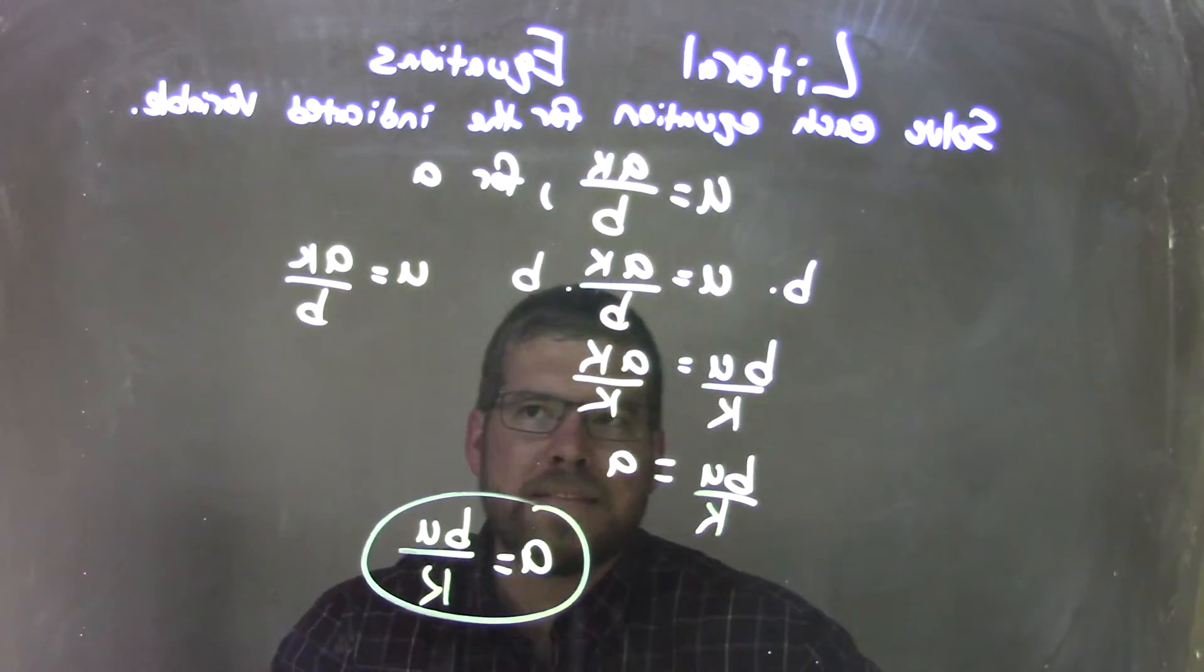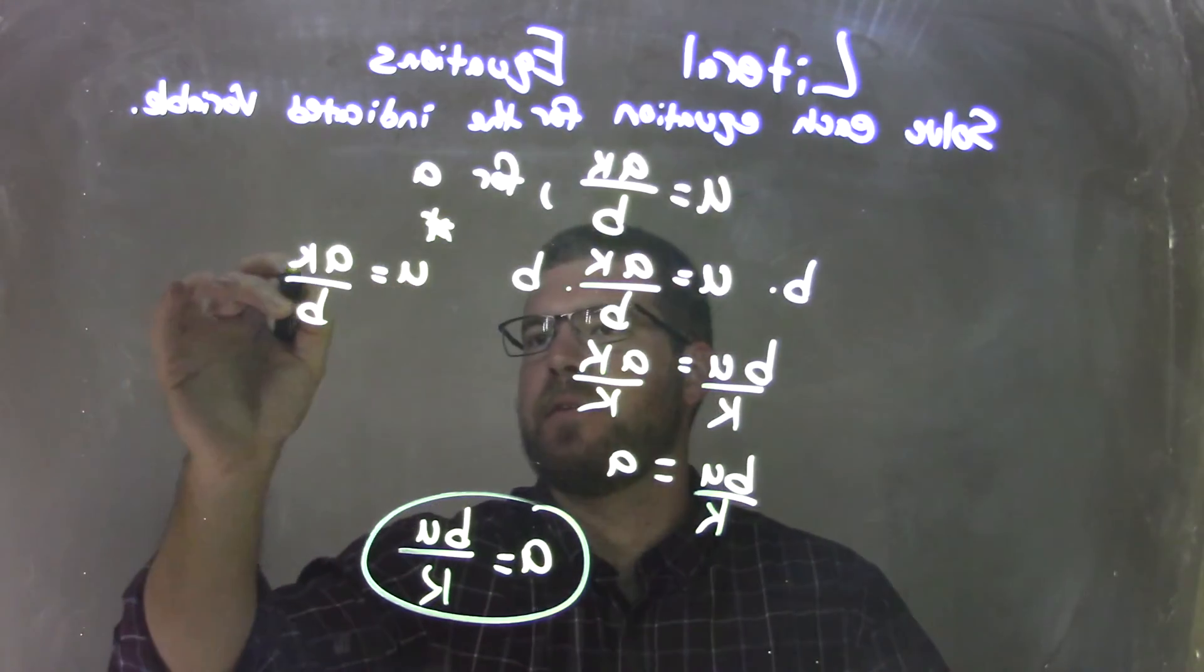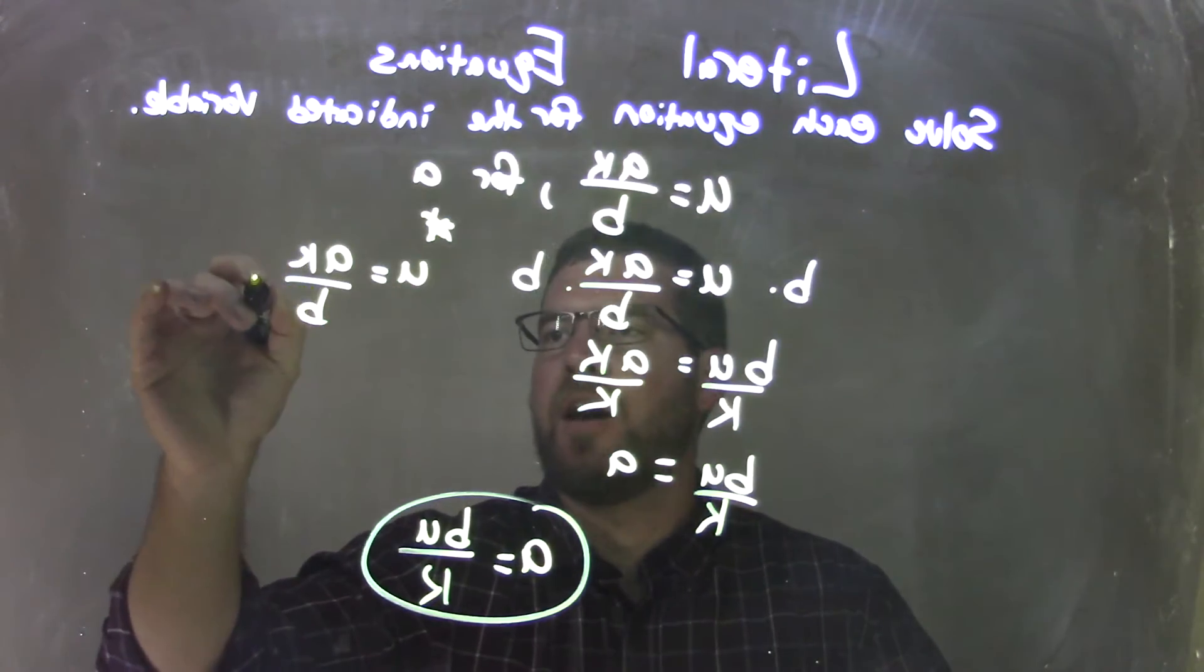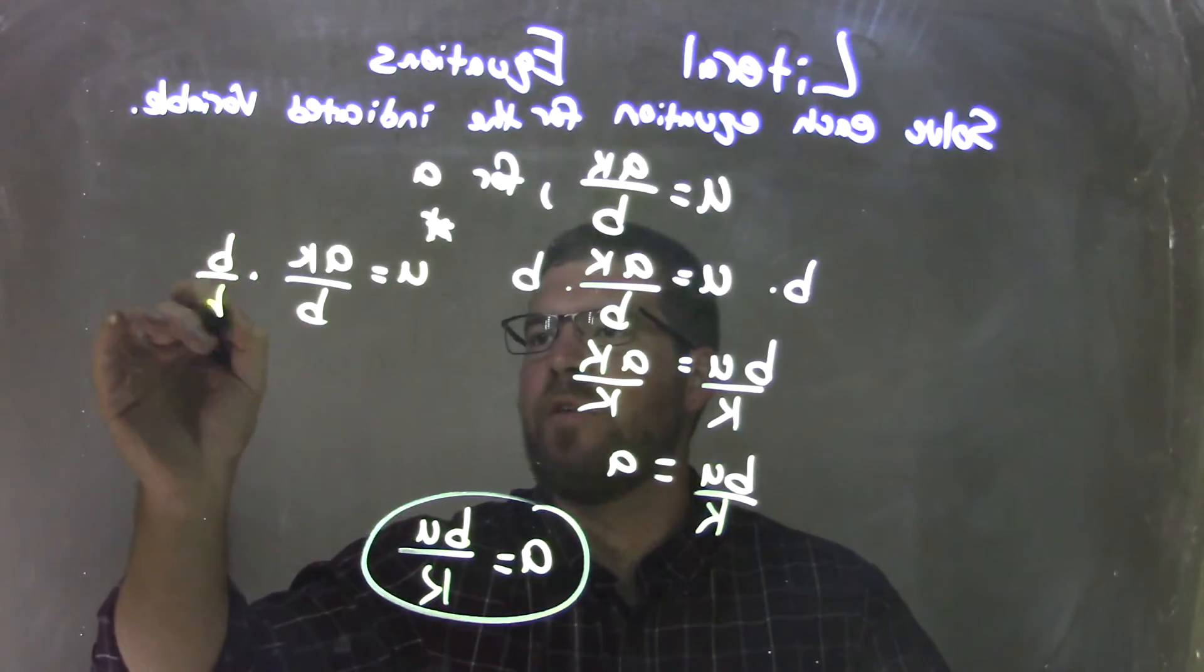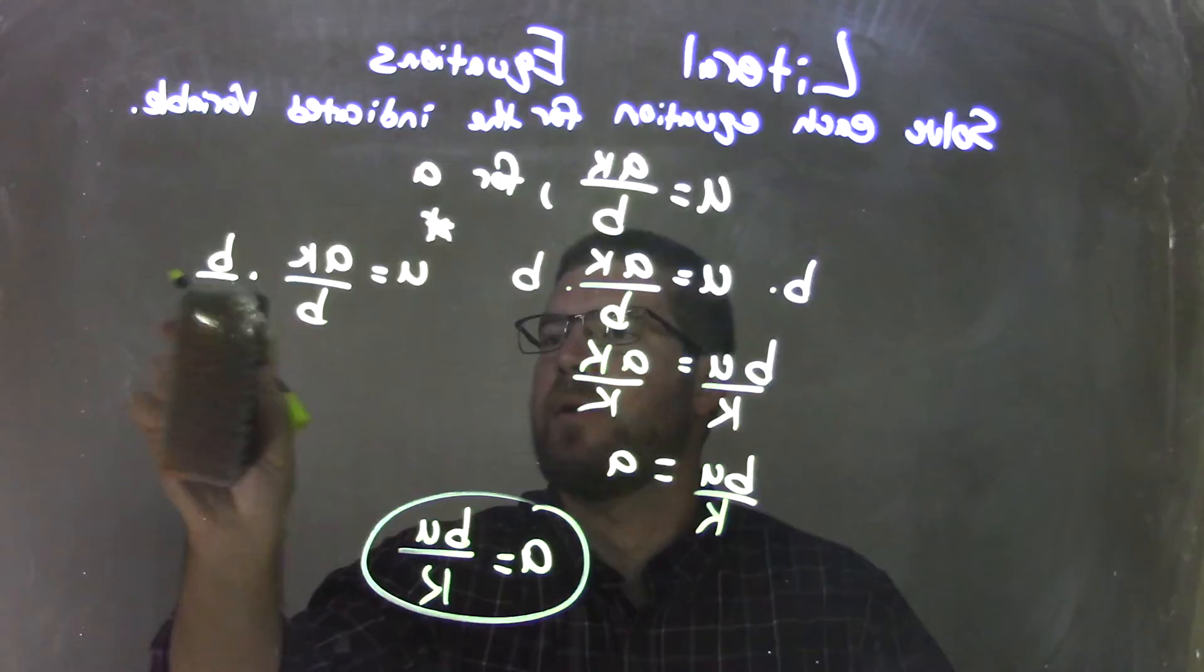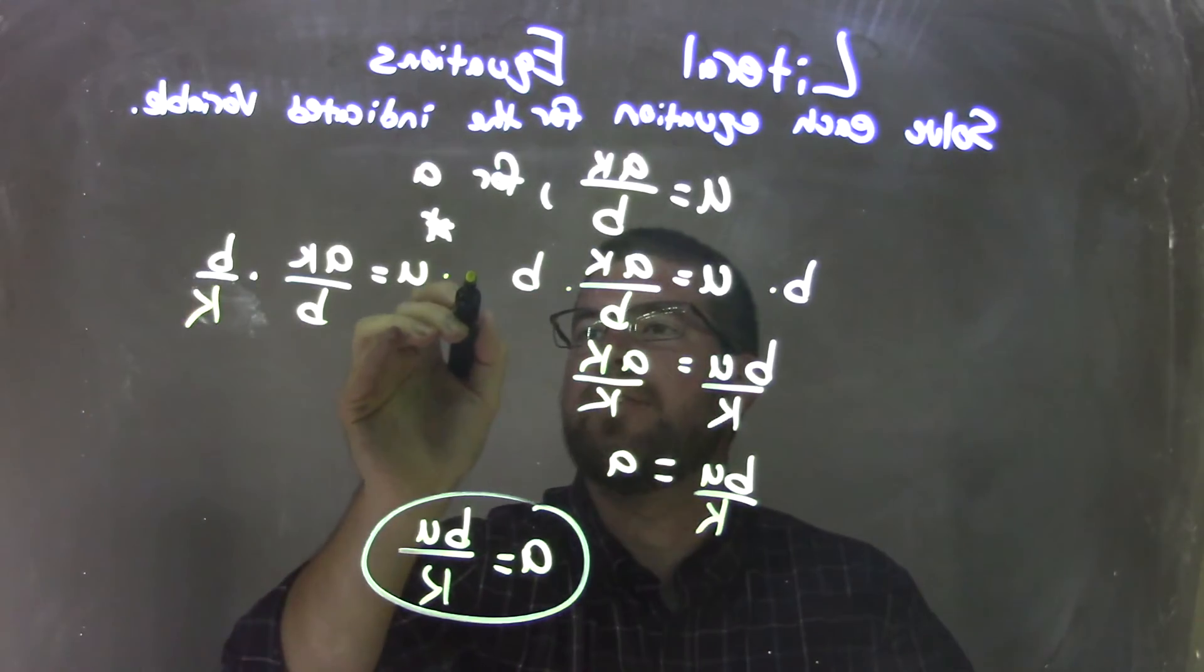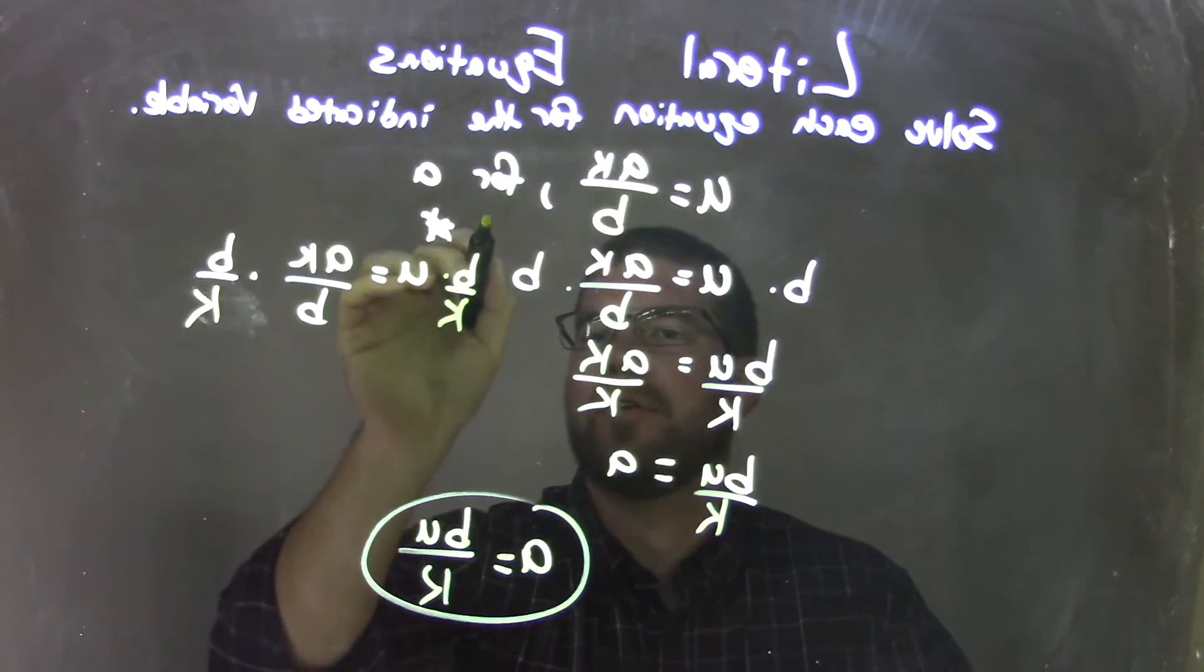Or I can do it all in one step. And this is like another little method if you want to do it that way. So I have K over B here. I can multiply both sides by B over K. I'm going to multiply it by B over K. And what that does, there's a little separation here.